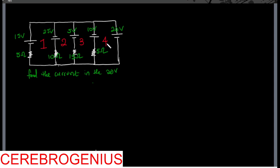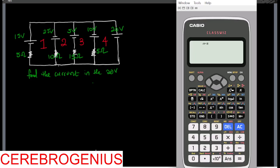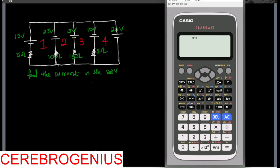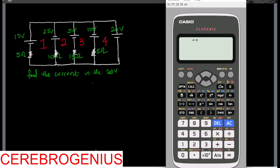Then we go as we always go. We are going to be using Class B because this is the calculator that can solve simultaneous equations of four or more unknowns. Because you have four loops.